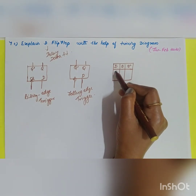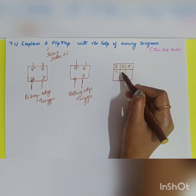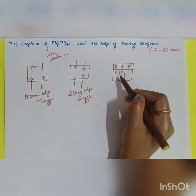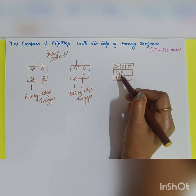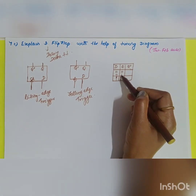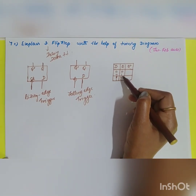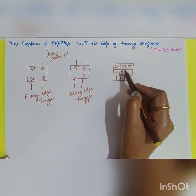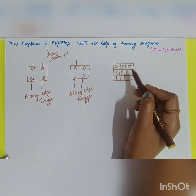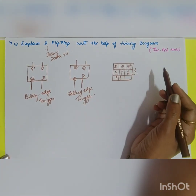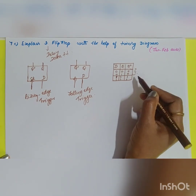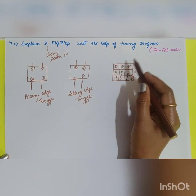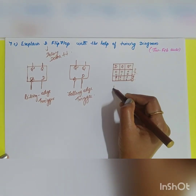The characteristic table consists of the present state and the next state. The input D can be 0 or 1, giving combinations: D=0 with Q=0, D=0 with Q=1, D=1 with Q=0, and D=1 with Q=1. When D is equal to 0, the next state Q+ is 0; when D is equal to 1, the next state Q+ is 1, because the output is the same as the input D.